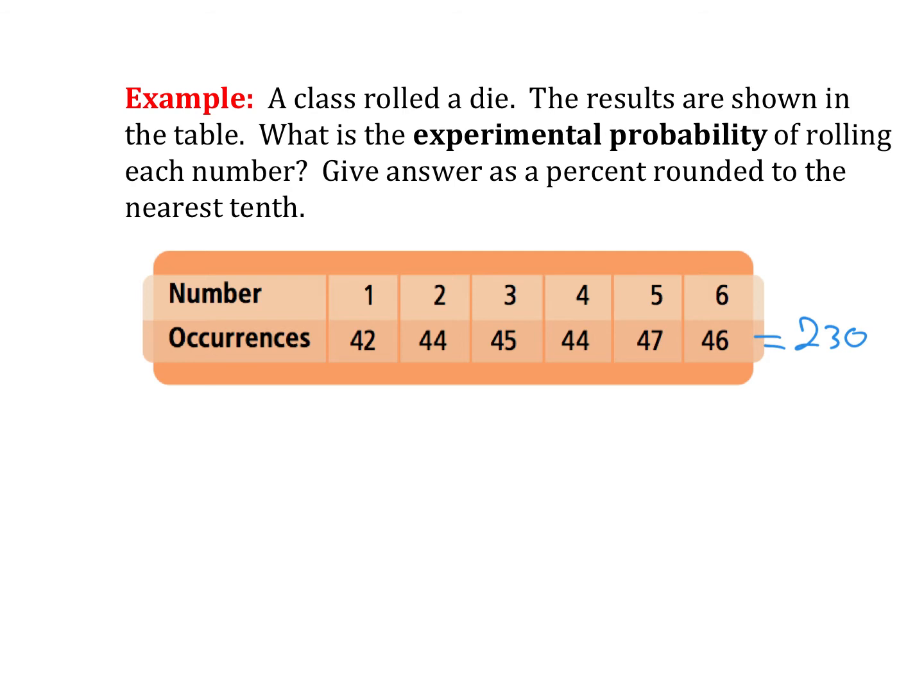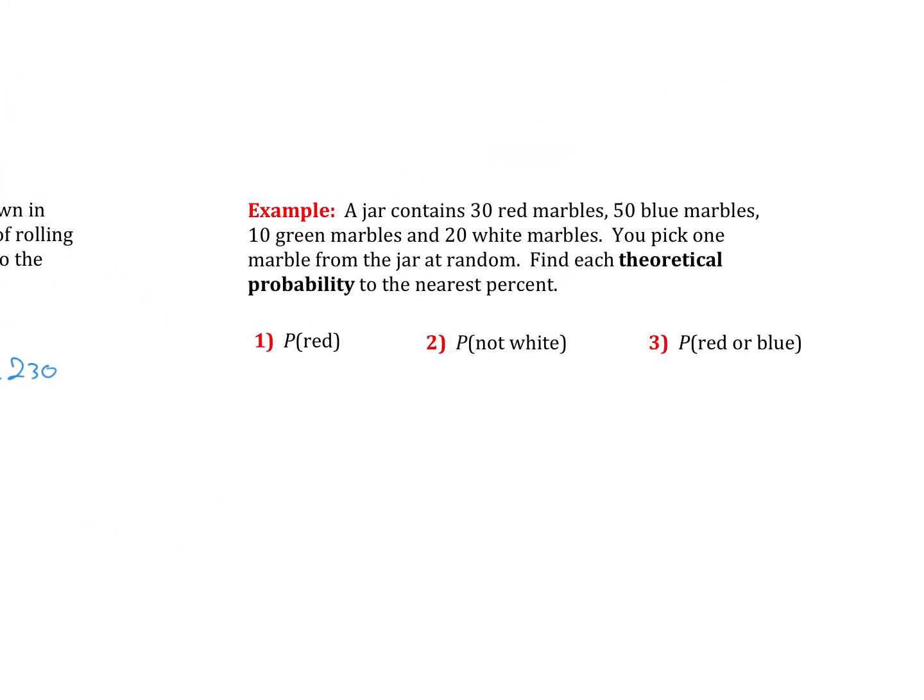From there, we take each occurrence. So the probability of rolling a 1 would be 42 divided by the total 230. The probability of rolling a 2 would be 44 out of 230. The probability of rolling a 3 would be 45 out of 230. The probability of rolling a 4 would be the 44 times that a 4 was rolled over the 230 total times. This continues for all of those numbers. Now, I have them written here as fractions. This problem is asking for decimals. So all we do is throw these into our calculator. Top number divided by 230 and round accordingly.